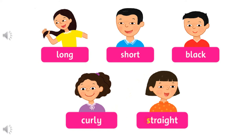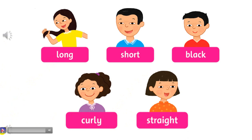That's it. Now let's listen and chant — Listening 107, listen and chant: long, short, black, curly. The chant repeats all five vocabulary words rhythmically.